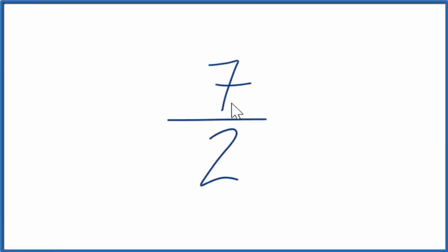Let's write the fraction 7 over 2 as a whole number, as a mixed fraction. And to do that, I'll show you two ways.